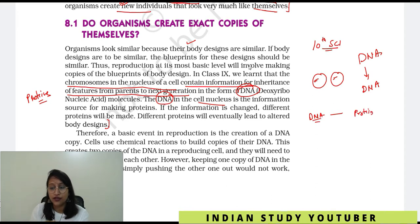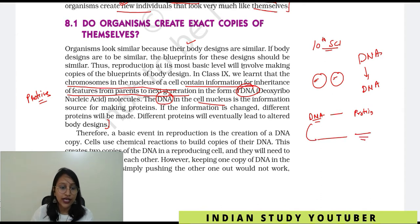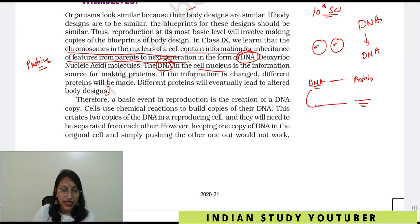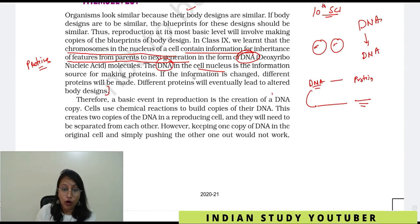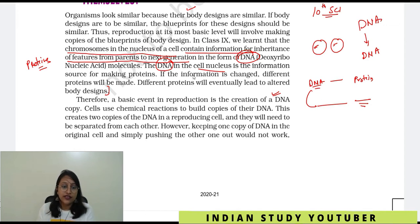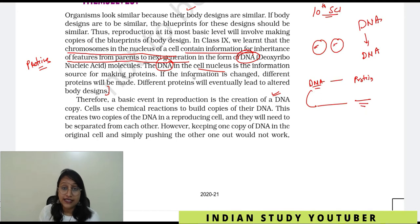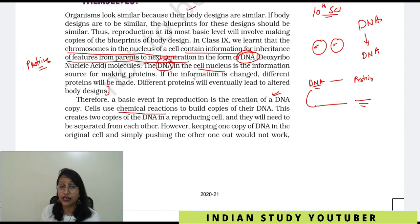This DNA information determines which protein will be created. If it is changed a little, a different type of protein will be made — it will not create exactly the same protein. Therefore, a basic event in reproduction is the creation of a DNA copy. The most important thing in reproduction is that DNA is copied. Cells use chemical reactions to build copies of their DNA.